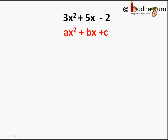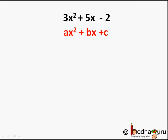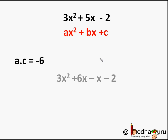Let's verify it with another example. Let's take 3x² + 5x - 2. This is again of the form ax² + bx + c, where a = 3, b = 5, and c = -2. First, let us factorize it.